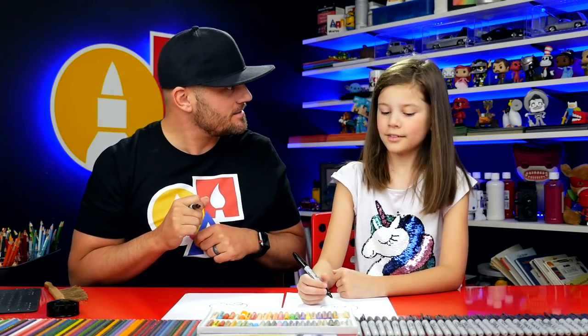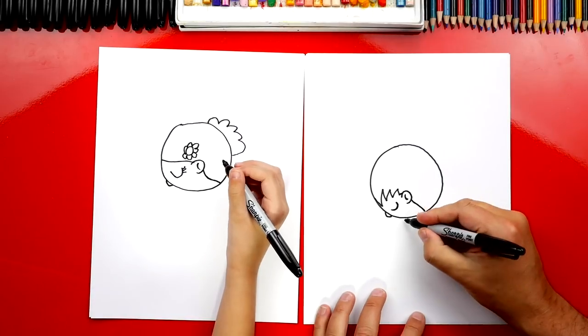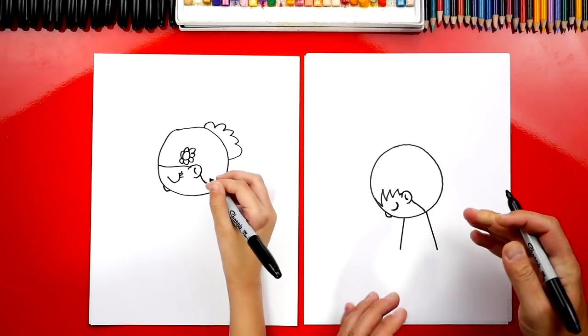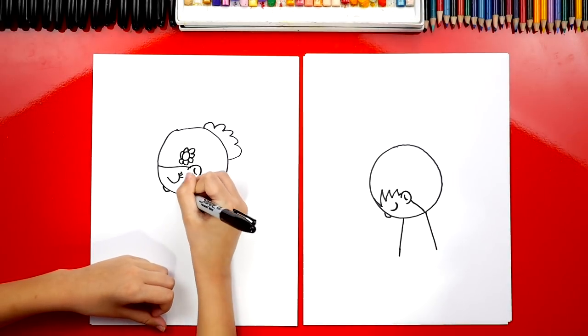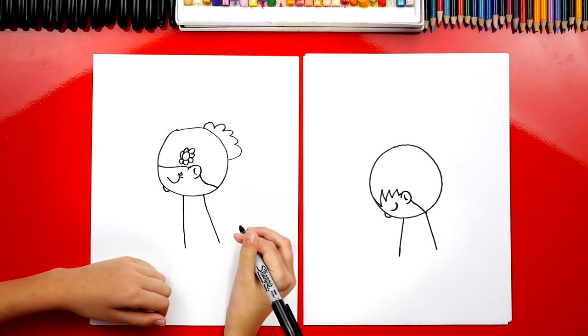Now, what should we draw next? The body. We're going to draw two lines. And they're coming further apart down at the bottom. And we're going to keep this lesson really simple. I love simple lessons.